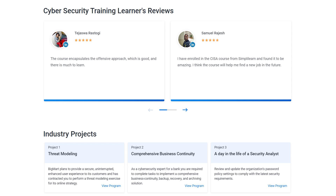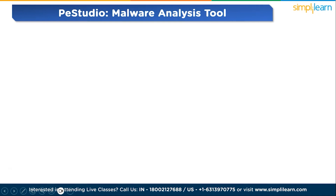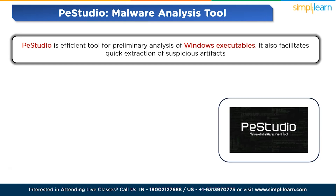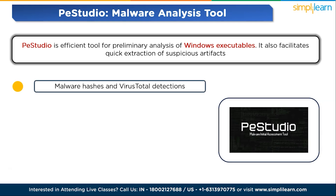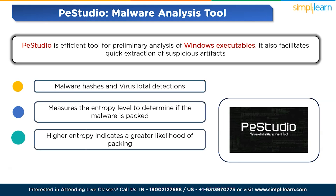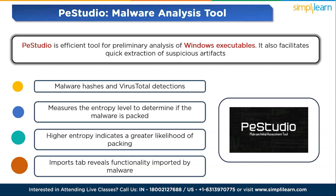The first tool on the list is PE Studio. PE Studio is an efficient tool for preliminary analysis of Windows executables, facilitating quick extraction of suspicious artifacts. It provides malware hashes and VirusTotal detections upon loading a binary, and unveils a list of strings with considerations for packed samples. For entropy analysis, it measures the entropy level to determine if the malware is packed — higher entropy indicates a greater likelihood of packing, obscuring true functionality. The imports tab reveals functionality imported by the malware, useful for predicting potential malware behavior based on imported APIs.